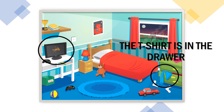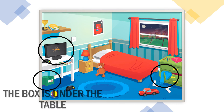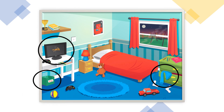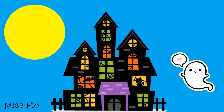Now let's try this one. Where is the green box? The box is under the table. Very good. Today we've learned how to say where things are. We'll continue on another video. See you next class. Bye.